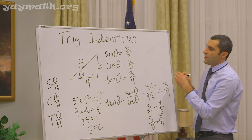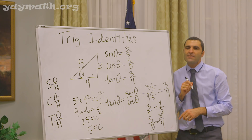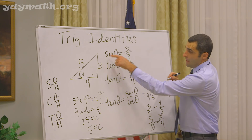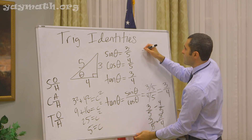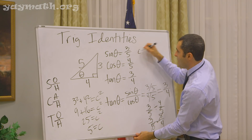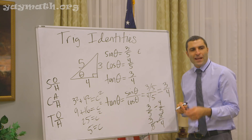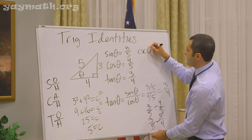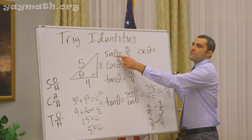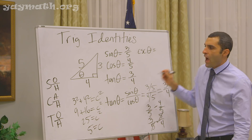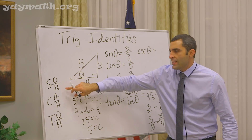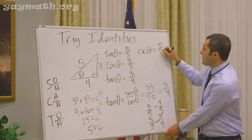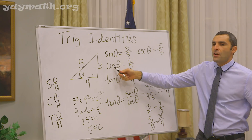Let's do the reciprocal functions. Do you recall what the reciprocal of sine is? CSC — yes, CSC is cosecant. Cosecant is the reciprocal of sine. So instead of opposite over hypotenuse, it's hypotenuse over opposite, which makes 5 over 3.